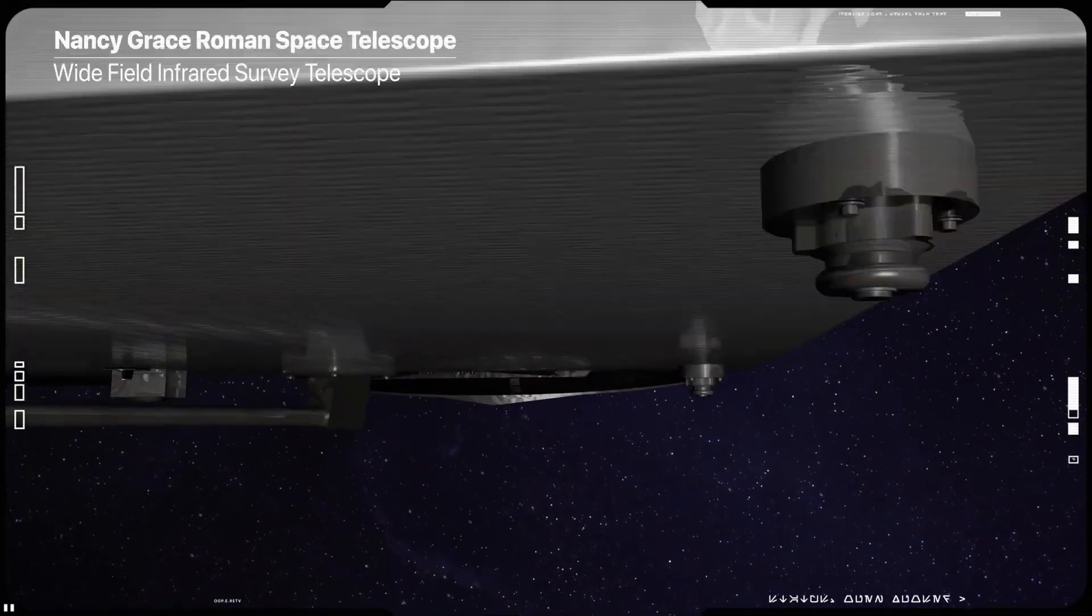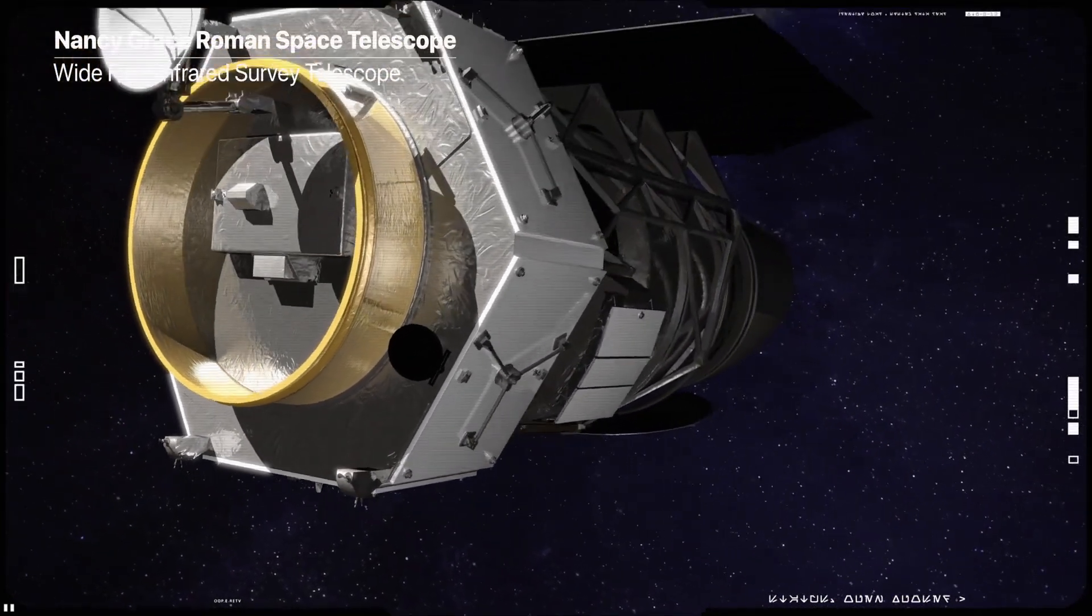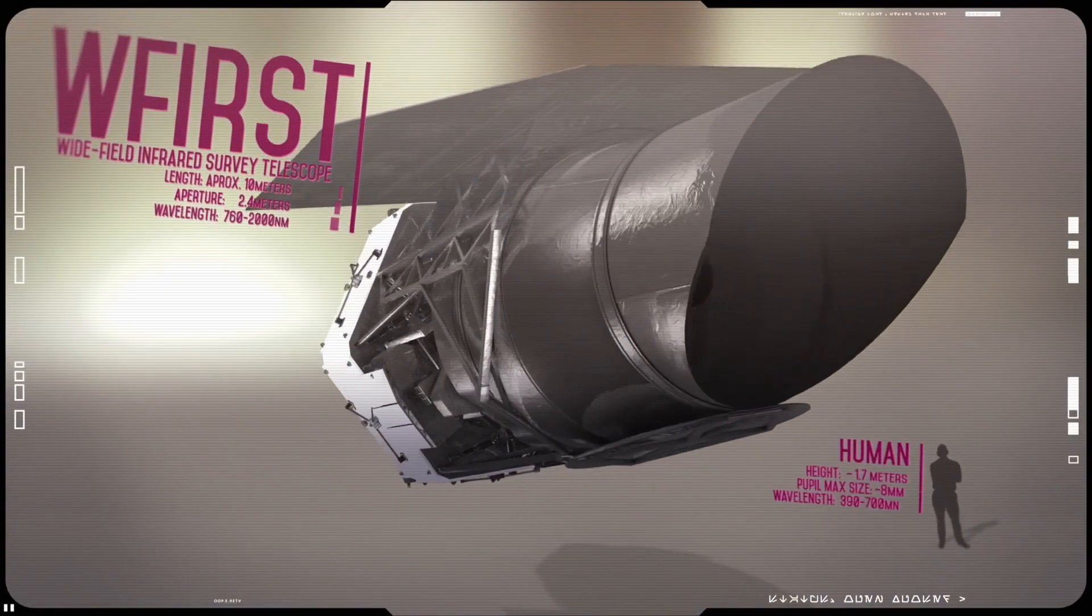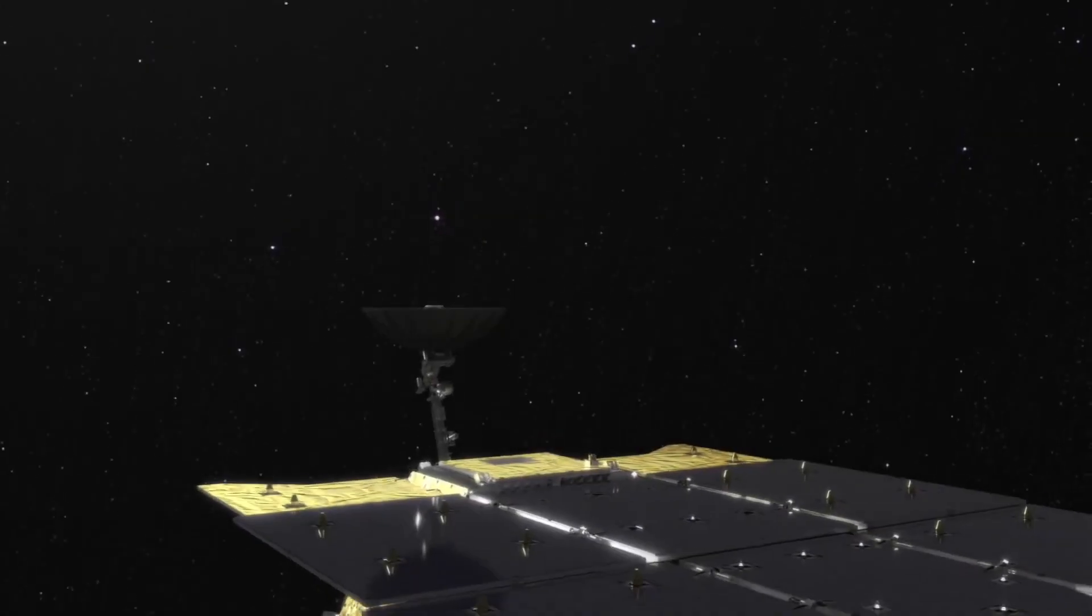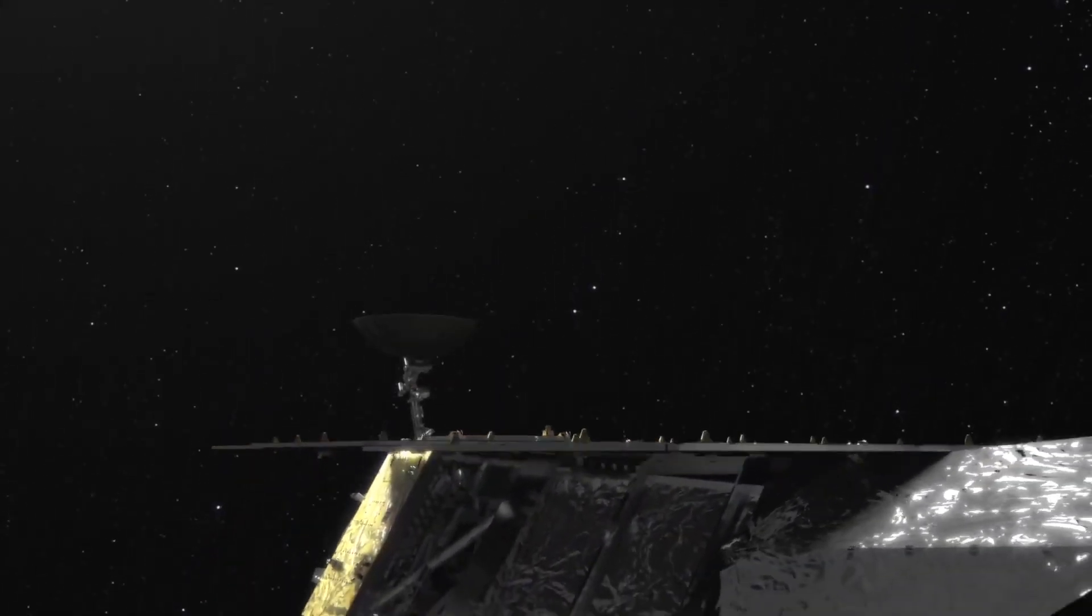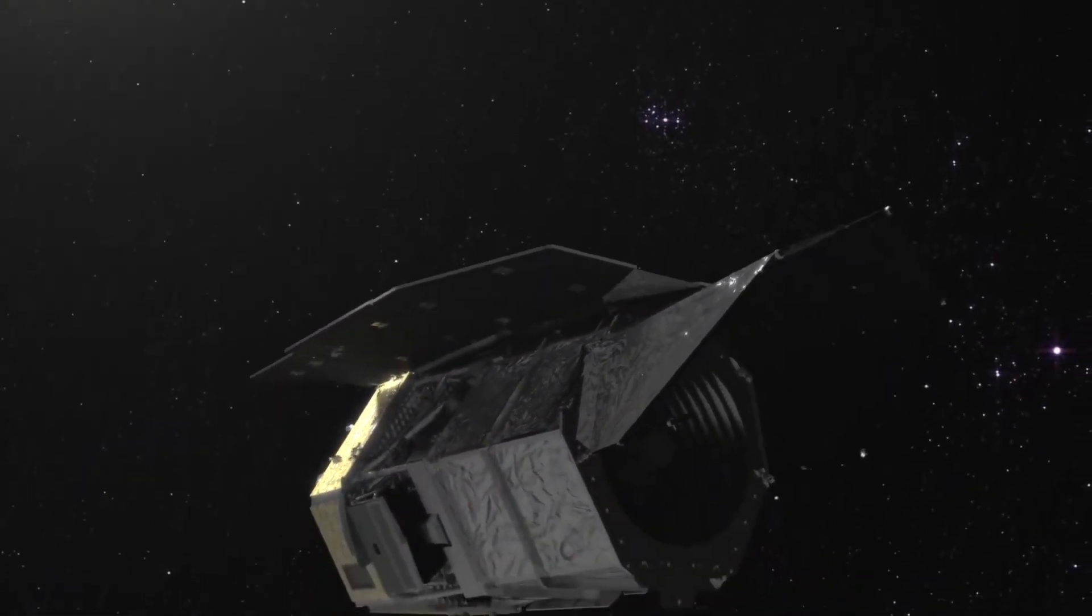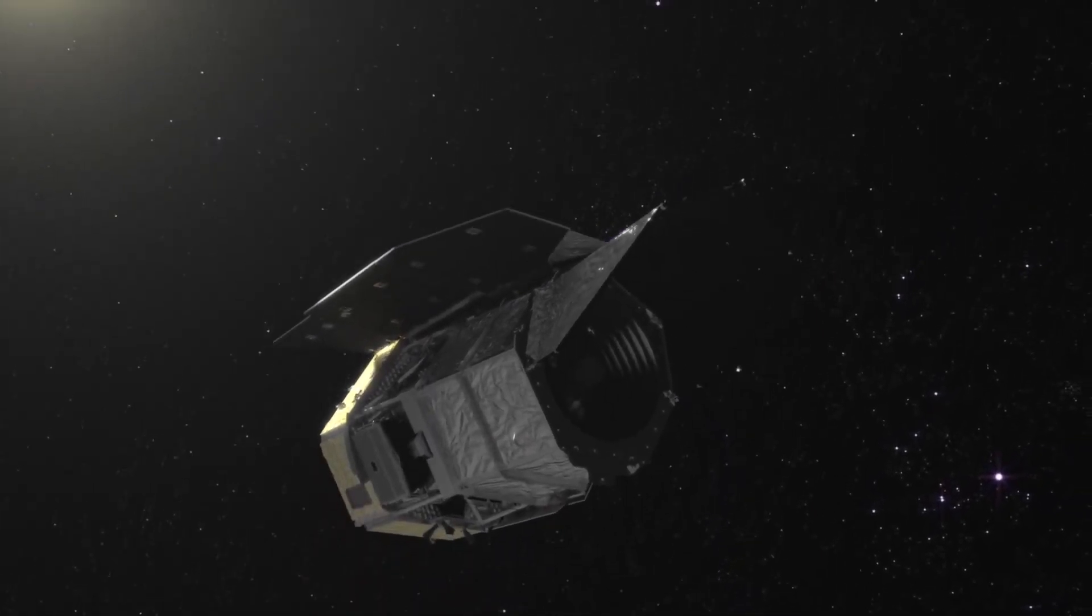In addition, the Nancy Grace Roman Space Telescope, expected to launch in 2027, will make new exoplanet discoveries using a variety of methods. Furthermore, the ESA mission, Ariel, launching in 2029, will observe exoplanet atmospheres. A piece of NASA technology aboard called CASE will help zero in on exoplanet clouds and hazes.